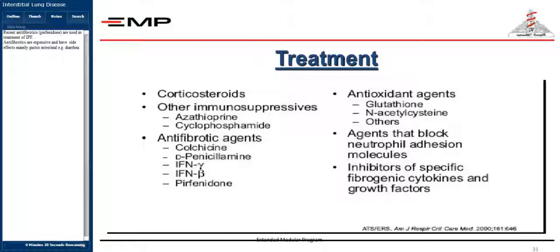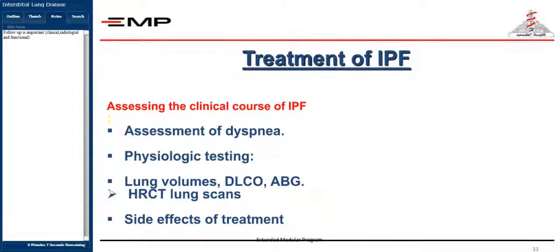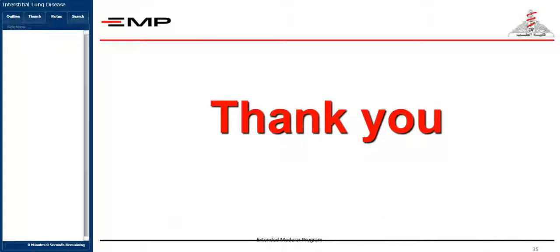Side effects are mainly gastrointestinal, for example diarrhea. Recent antifibrotics, for example pirfenidone, and tyrosine kinase inhibitors, for example imatinib and nintedanib, are under trials for effective treatment of IPF. Follow-up is important — clinical, radiological, and functional. Summary and take-home message.